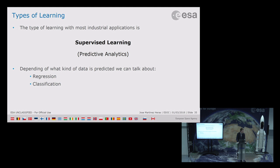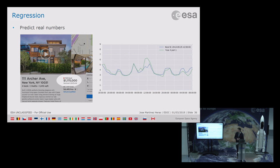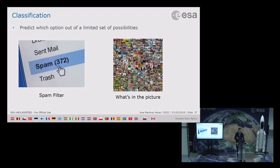Depending on what you are predicting, we can differentiate two cases: regression and classification. Regression is to predict real numbers — for example, predicting telemetry or predicting how much a house will sell for. Classification is to predict which option from a limited set of possibilities — for instance, for spam filter there are only two possibilities: spam or non-spam. For image classification, you predict which object it is out of 1,000 categories.